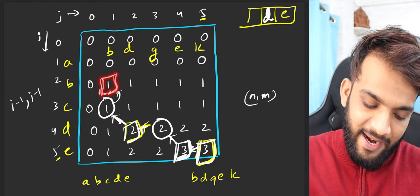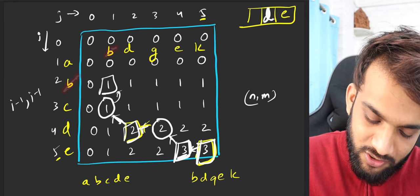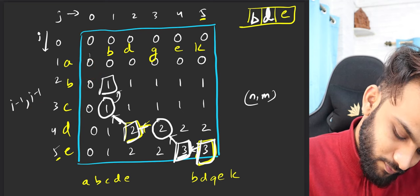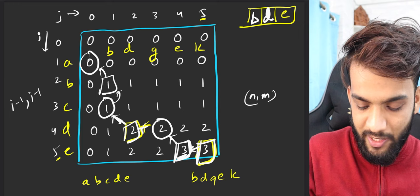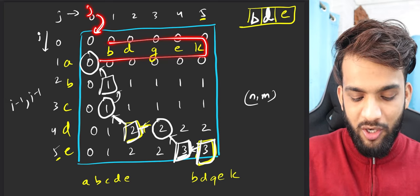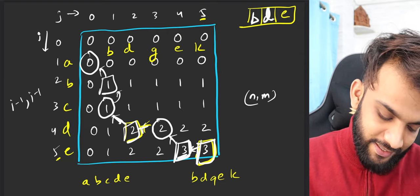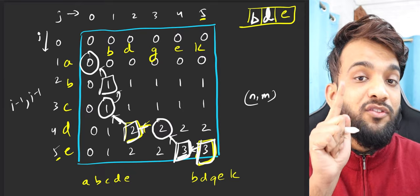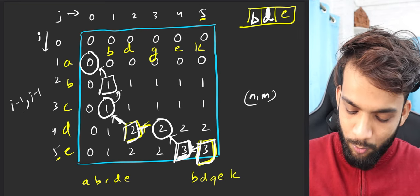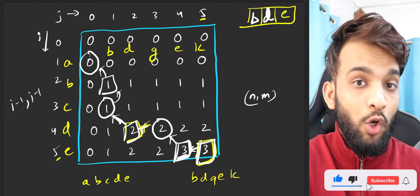Now you're at dp[1][1]: 'b' from s1 and 'b' from s2 — they match! Since they match, take this and move diagonally to dp[0][0]. But remember: the string BDGEK — j is now at the zeroth index, meaning you've exhausted the second string. There's no more length remaining, so it's over. If either string gets exhausted, stop immediately.